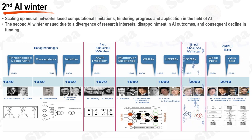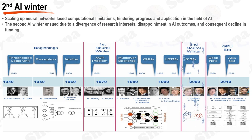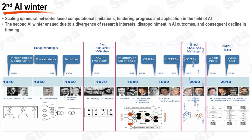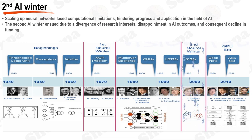Despite the initial wave of excitement surrounding neural networks, researchers soon collided with a formidable wall of challenges when attempting to scale up these systems. The state of computational resources during this era was simply not advanced enough to manage the training of large, intricate neural network models. This scarcity of computational power inherently shackled the potential real-world applications of neural networks. Simultaneously, alternative approaches to AI, such as expert systems and symbolic AI, were also starting to accumulate interest. Over time, the inherent limitations of both neural networks and alternative AI approaches started to unveil themselves, and a sense of skepticism among researchers and funding organizations set the stage for the onset of the second AI winter.